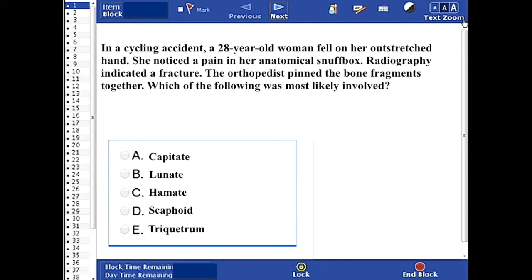As soon as you see that anatomical snuffbox, that should be a red flag for you. Fall on outstretched hand, the age of this individual, all will be important indicators for the fact that she's probably got a scaphoid fracture.